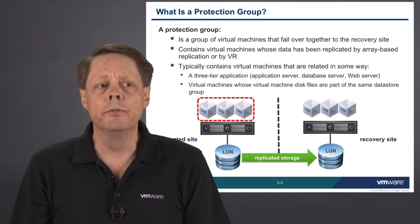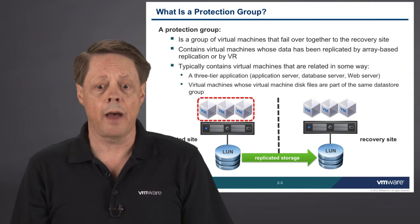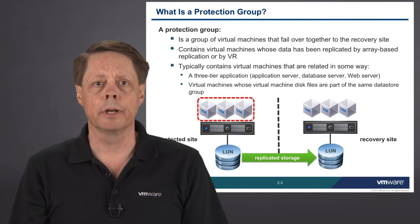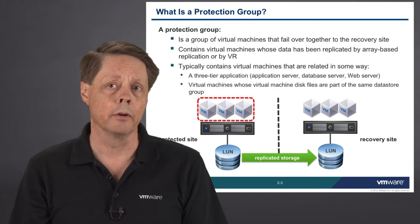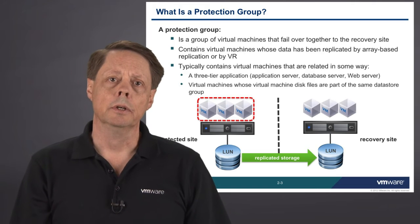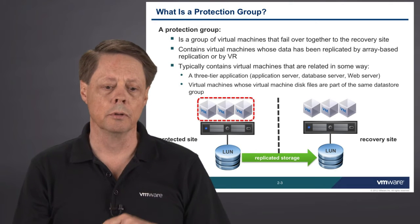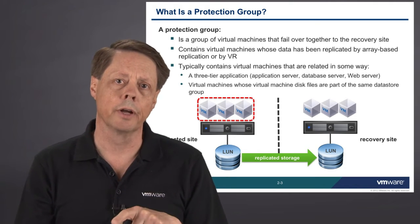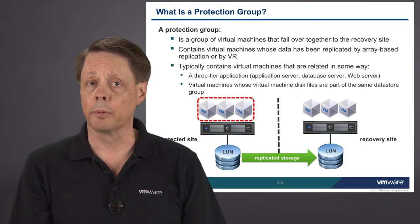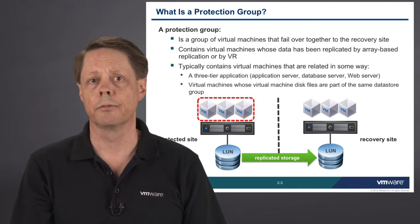Let's look at it another way. Maybe you've got one of those applications that's a web server, a database server, and an application server that work together. They have to have each other in order to perform the functions of dealing with your website. It probably makes sense to build those into a protection group such that they will only ever failover together — either running in whole on the protected site or running in whole on the recovery site. Virtual machines whose disk files are part of the same data store group are also another way to define this. If eight VMs live on the same SAN LUN and they're protected by SAN replication, we're going to have to protect those as part of a protection group together.